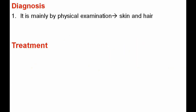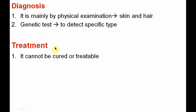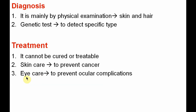Diagnosis is mainly by physical examination, particularly of the skin and hair. You can also go for genetic testing to detect the specific type or form of albinism. Regarding treatment, it cannot be cured as it is a genetic disorder. Special care must be given to the skin with regular examination to prevent cancer formation, and special care to the eye to prevent ocular complications. Nowadays, glasses or contact lenses are used for eye care in patients with albinism.